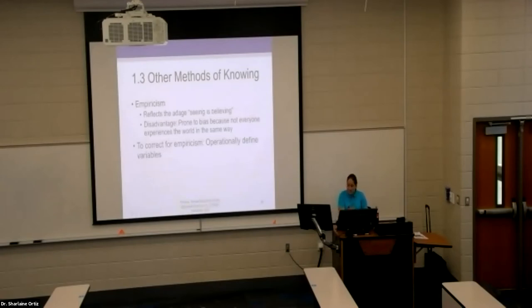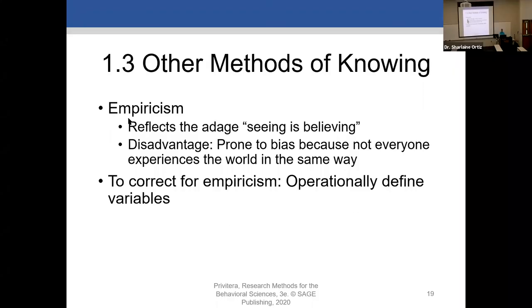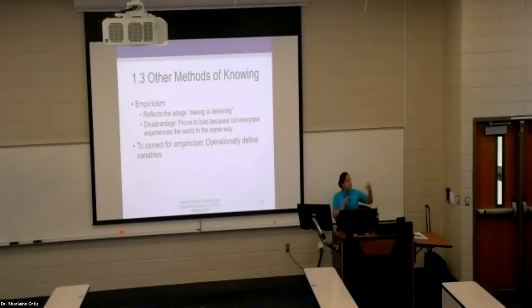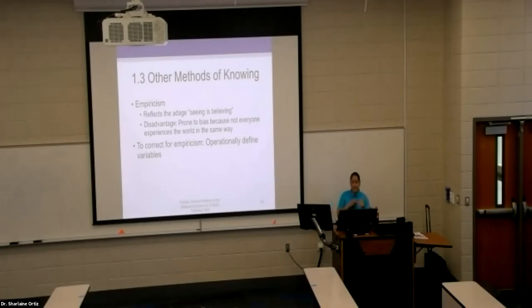Another method of finding knowledge is empiricism - traditionally defined as knowledge acquired through observation. If I see it, touch it, smell it, feel it, it must be true. It's basically what we can acquire through our senses. We generally think: I can look out the window and clearly say the sky's not purple, I can literally see it. The idea is basically seeing is believing - you didn't go through that experience, I did, so I know it happened because I felt it or saw it.